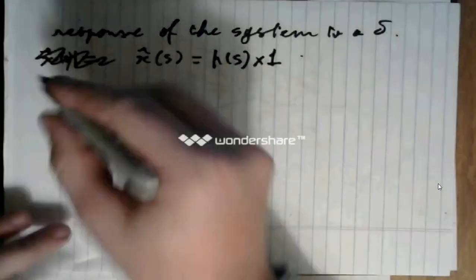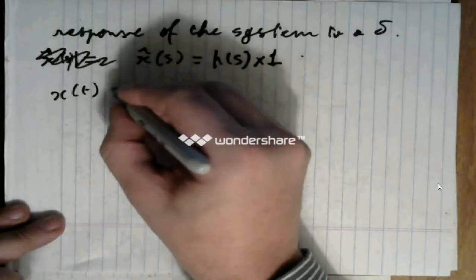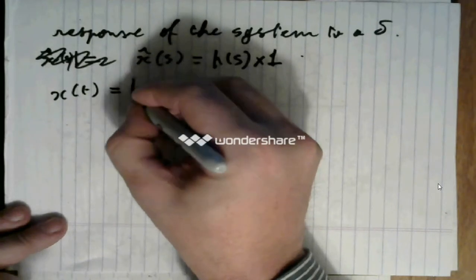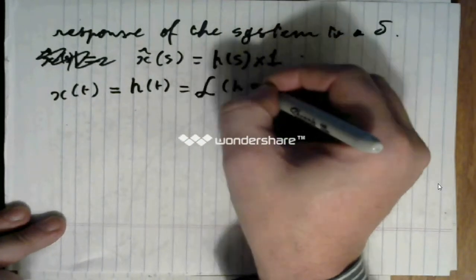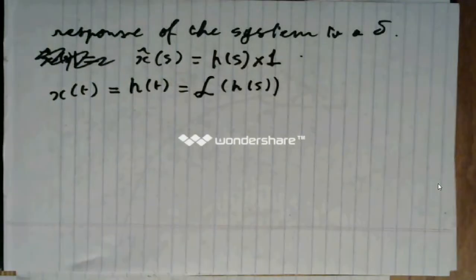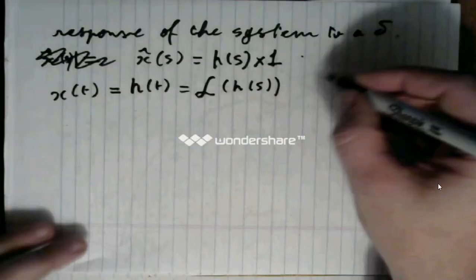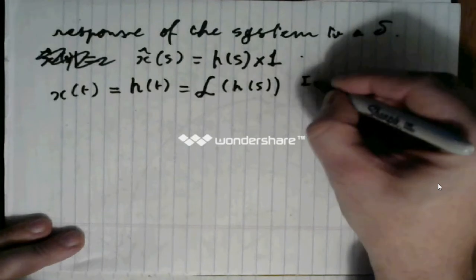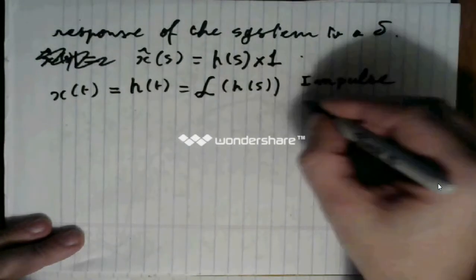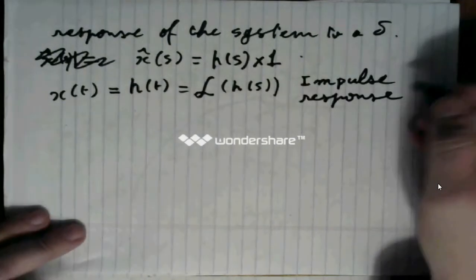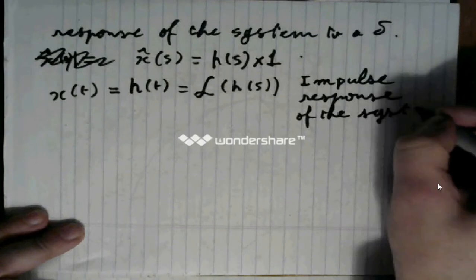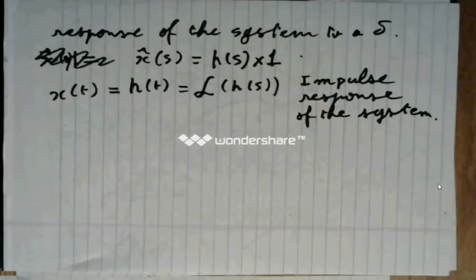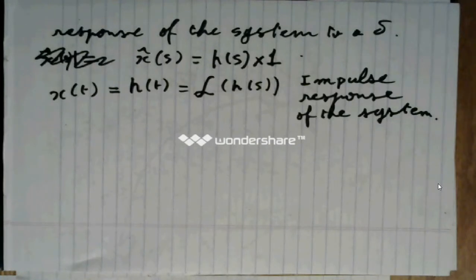There is a certain h x of t that corresponds to that, which we will call often h of t, and which is the inverse Laplace transform of h of s. It is a particular response. Now, this particular response is named the impulse response of the system, and it is exactly what it means. It is the response of a kick into the system.